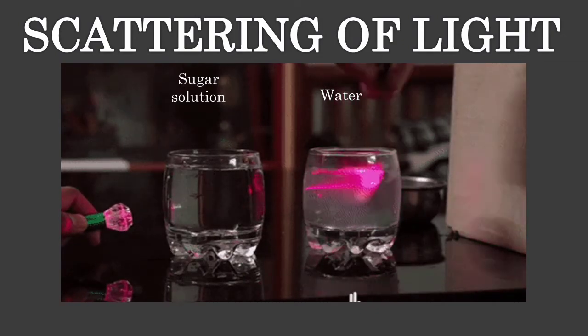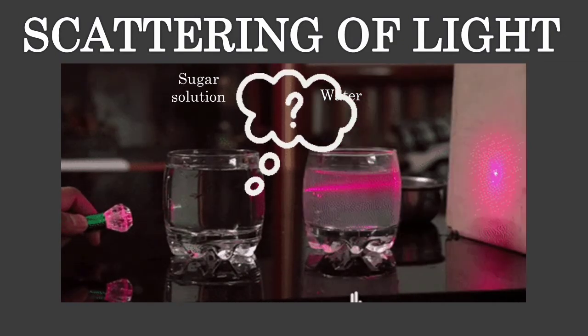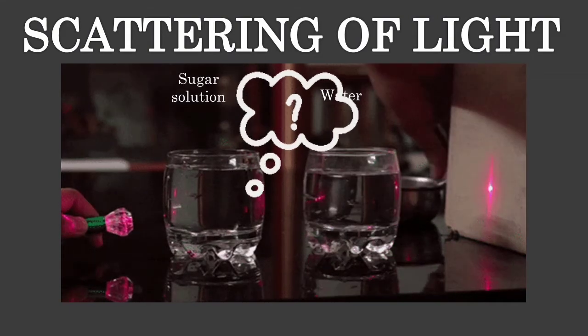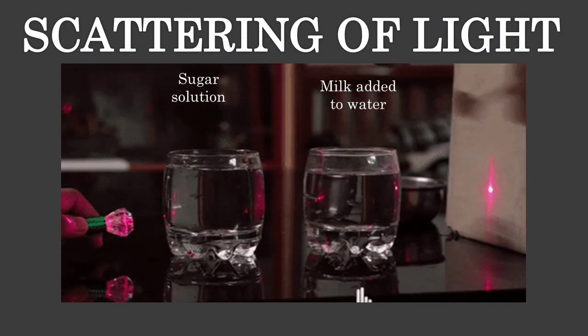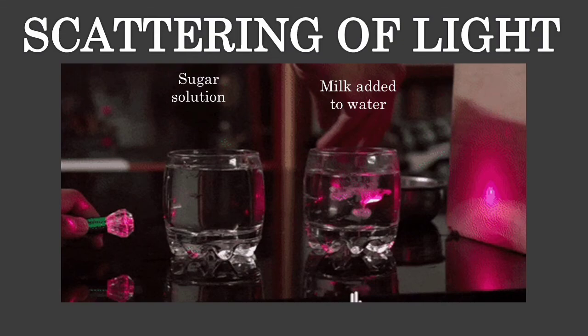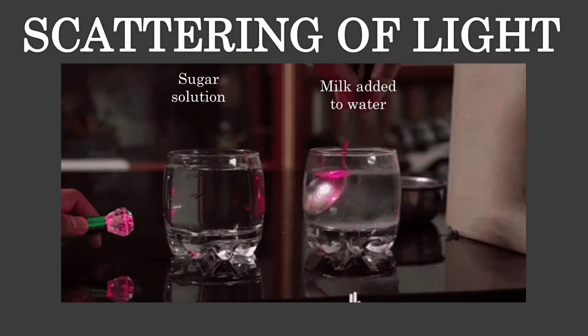Why do you think you see the path of the light in the second glass but not in the first one, that is in sugar solution? The reason behind this phenomenon is scattering of light.